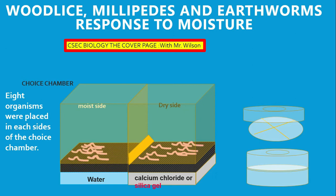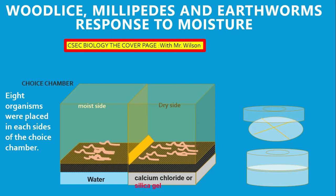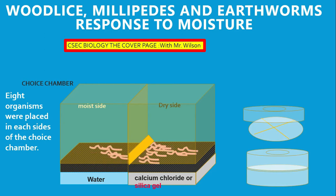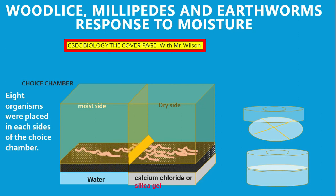You're going to be required to document this information after the experiment. The earthworms are collected from a compost heap — or you could get millipedes or wood lice from a compost heap — and ensure that no organism is harmed should you be carrying out this experiment at school. You are going to return the organisms after you complete the experiment.